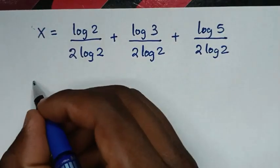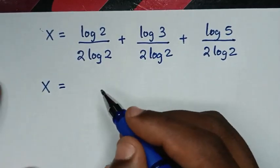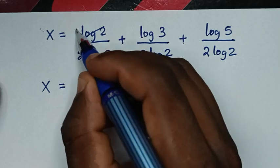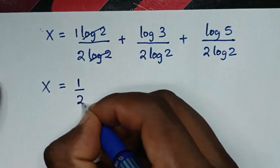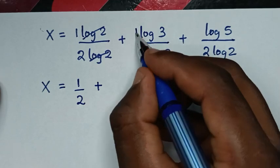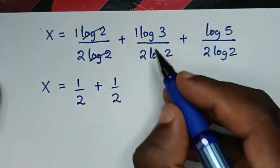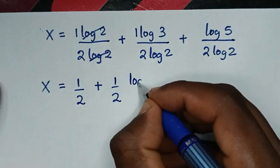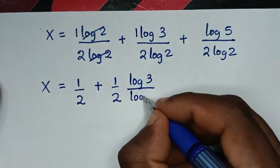Then to simplify, log of 2 over 2·log of 2 is 1 over 2. So we have 1/2, plus 1/2 times log of 3 over log of 2.